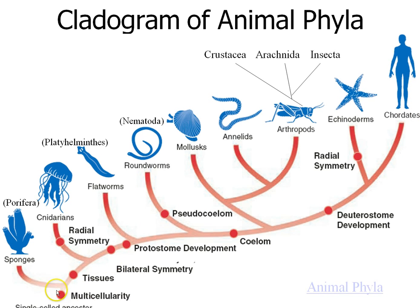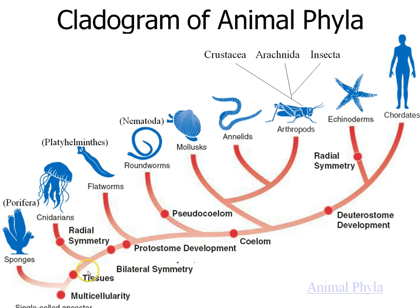Any time there's a branching point on the cladogram, those are the common ancestors to whatever branches from that point. So there's a common ancestor to roundworms and insects at this point — not a roundworm or an insect, but something simpler. Sometimes we have that transitional fossil, sometimes we don't. Every time we discover a new fossil, we can place it somewhere along this timeline, and it always matches up with whatever we find.